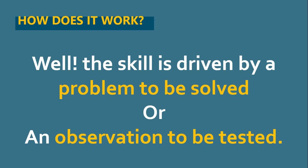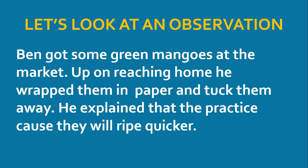How does it work? The skill is driven by a problem to be solved, or an observation to be tested. It is not something that is necessarily bad. Let's look at an observation: Ben got some green mangoes at the market. Upon reaching home, he wrapped them in paper and tucked them away. He explained that the practice caused them to ripen quickly. This is an observation, and this observation creates for the scientist a problem, because we are not allowed to just take what Ben said as the answer. We must find a way to test and determine whether or not what Ben said is true — does it really have any impact on how quickly these mangoes will ripen?